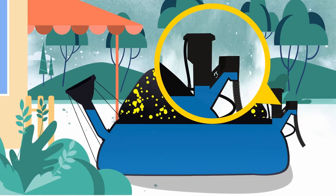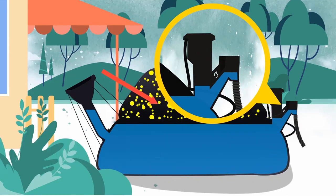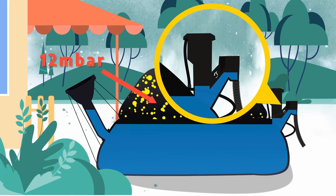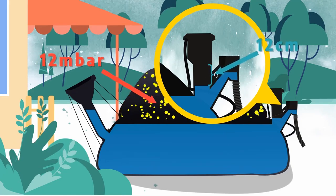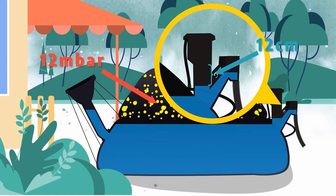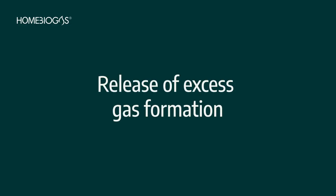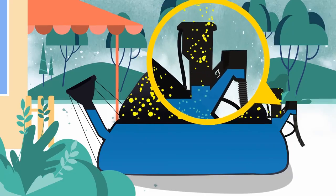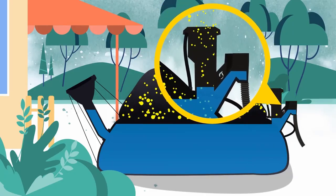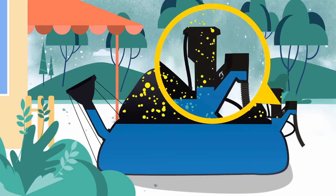When the gas bag is full, the pressure inside reaches up to 12 millibar. Biogas pushes down the water column on the combined overflow. At 12 millibar, excess biogas is released to the atmosphere from the combined overflow openings.